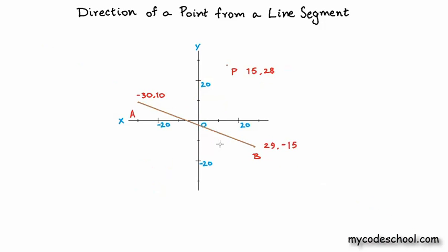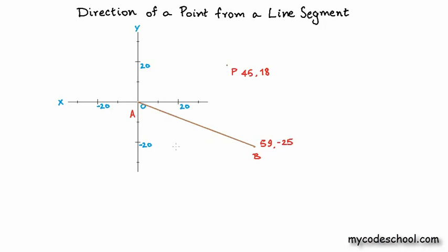If we go back to the original problem where A is not at the origin, a simple solution is to translate the coordinate system so that the origin O lies exactly at A. To do this, we subtract the coordinate values of A from all three points A, B, and P. When we subtract A from itself we get 0, making A the origin. After the translation, P becomes (45, 18) and B becomes (59, 25).